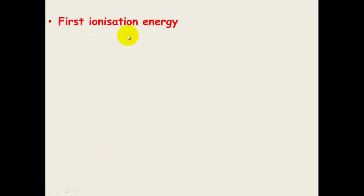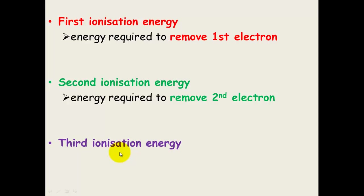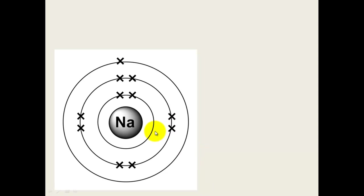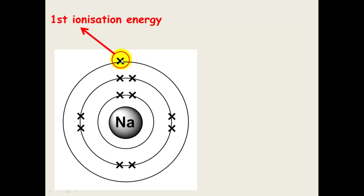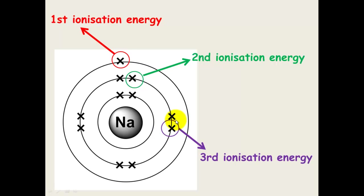We describe ionization energy as first ionization energy — the energy required to move the first electron; second ionization energy — the energy to remove the second electron; or third ionization energy — the energy required to remove the third electron. This changes depending on the element. For sodium, removing the first electron has low ionization energy. But the second electron must be removed from a full inner shell, which sodium doesn't want to lose, so that requires a high ionization energy. The same applies for the third.